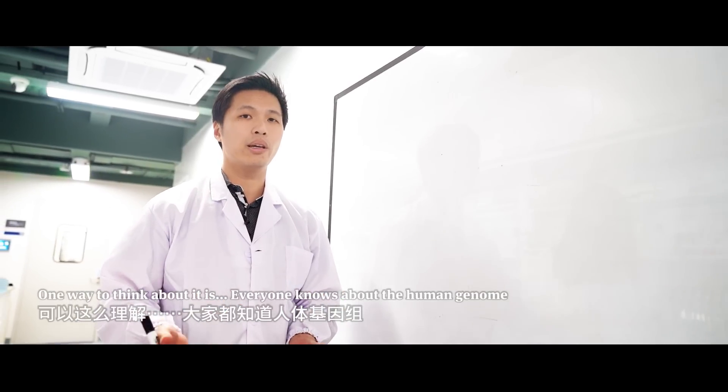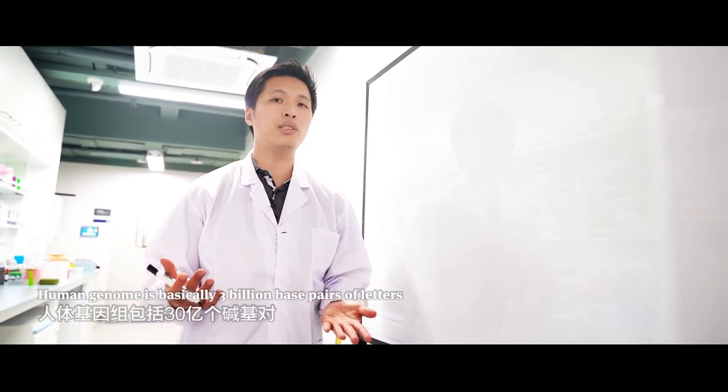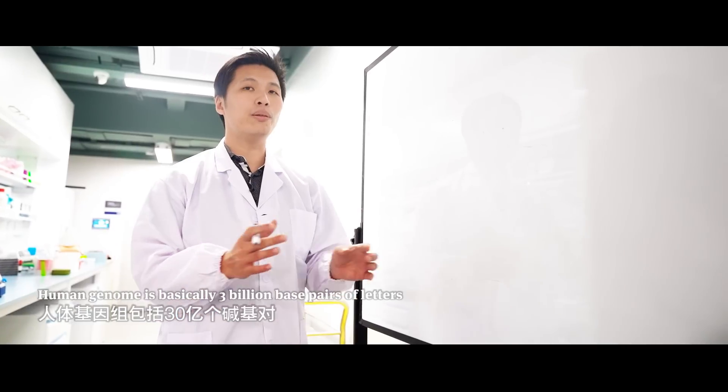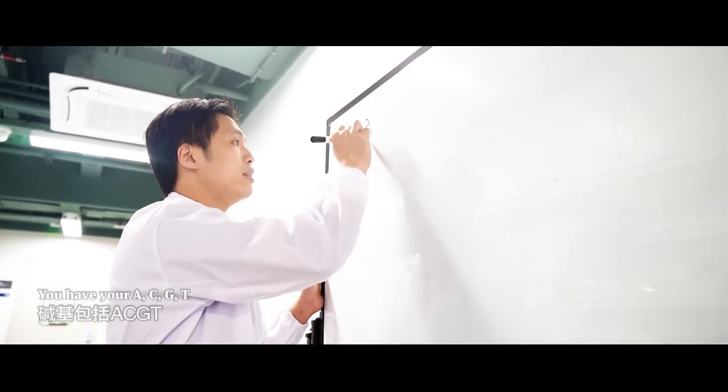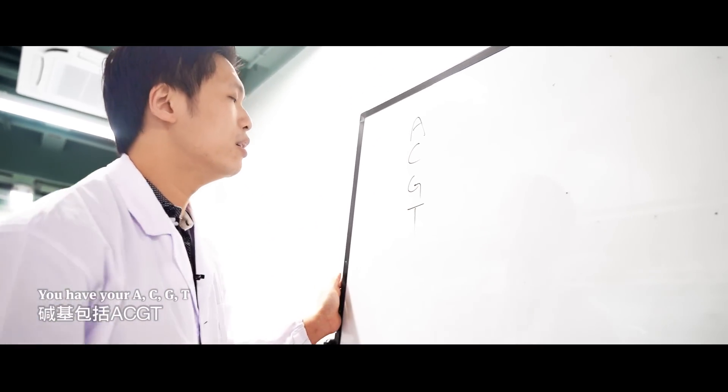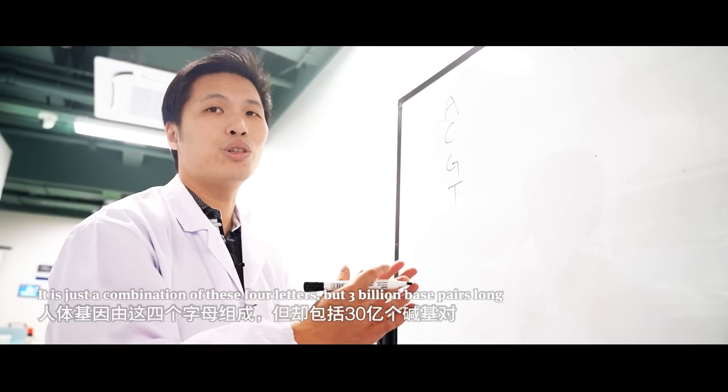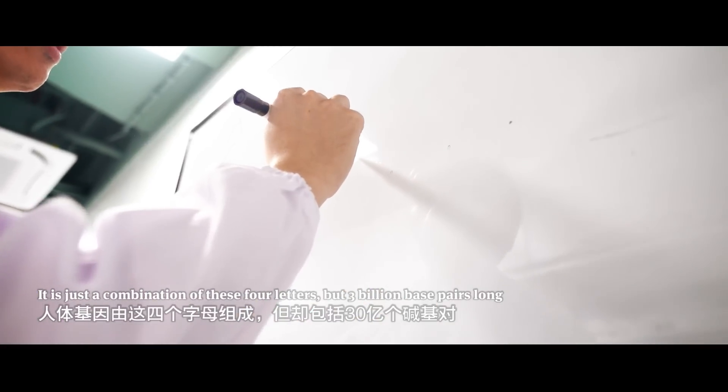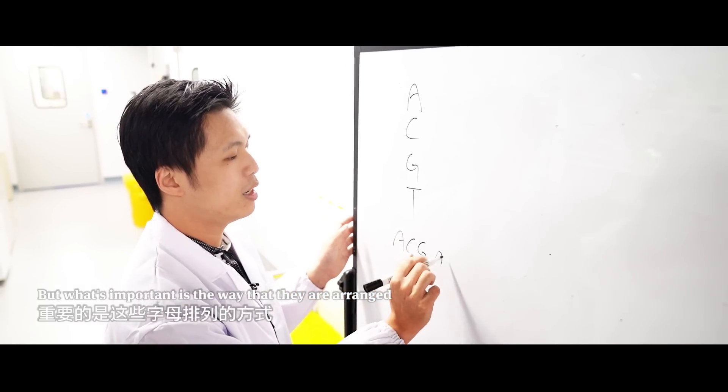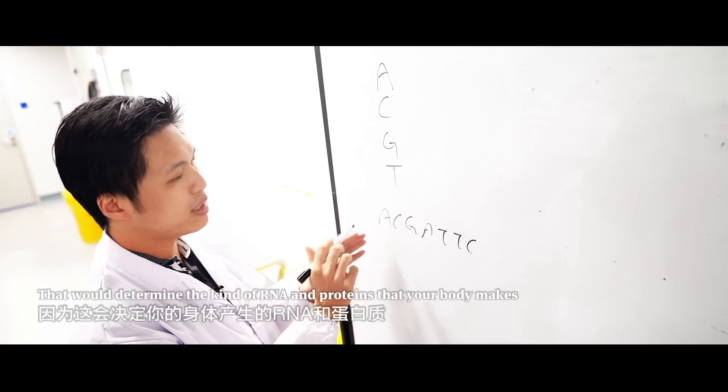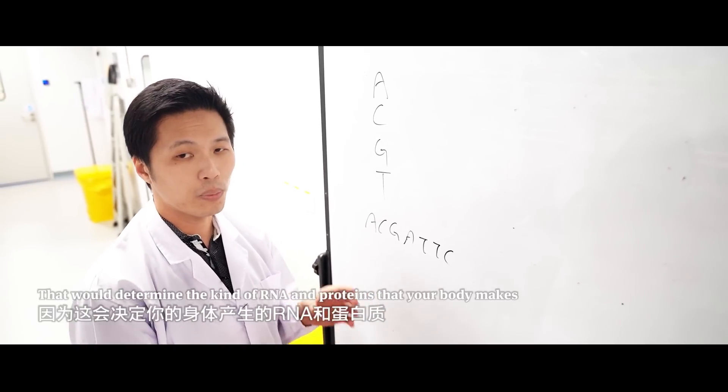Different RNA modifications play different roles in our bodies. Everyone knows about the human genome. Human genome is basically 3 billion base pairs of letters. You have your A, C, G, T. This is just a combination of these four letters, but 3 billion base pairs long. But what's important is the way that they are arranged, which will determine the kind of RNA and proteins that your body makes.